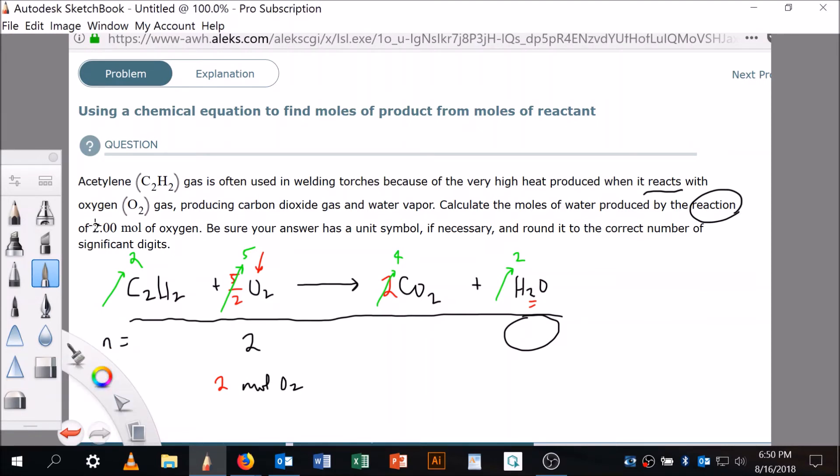Two moles of oxygen, and I really want to convert that to moles of H2O because that's what I was asked. Calculate the moles of water produced. So in order to do that, I've got to eliminate moles of oxygen so it will cancel and introduce moles of water, right? And this is my molar ratio - very important molar ratio.